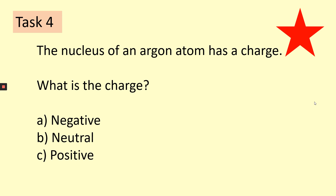Task four: a bromine atom can be represented as 80, 35, Br. The nucleus of a bromine atom has a charge. What is the charge? You have three options — A: negative, B: neutral, C: positive. Pause the video while you have a go at this question.